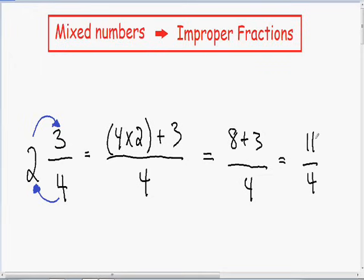So now we have an improper fraction because our numerator is greater than our denominator and our final answer is eleven over four.